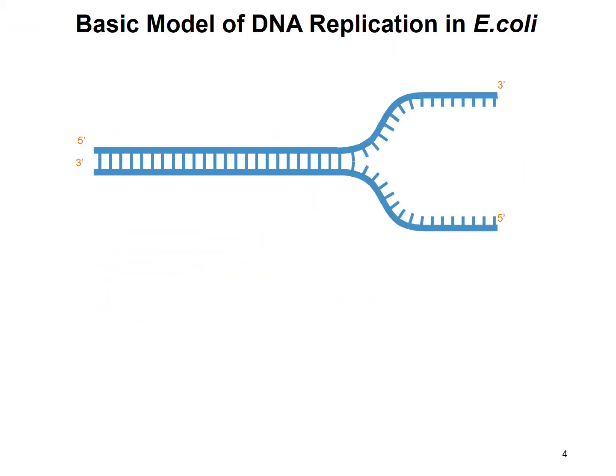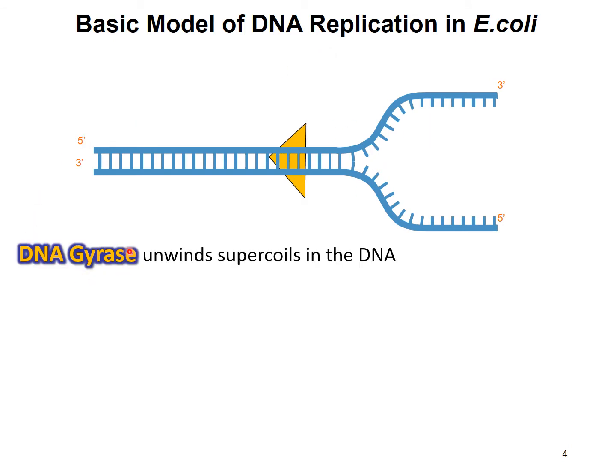Here is a basic model of DNA replication in E. coli and it includes many enzymes. The first one is DNA gyrase. What it does is to unwind the supercoils in the DNA, because most of the time DNA is supercoiled to form a compact structure.